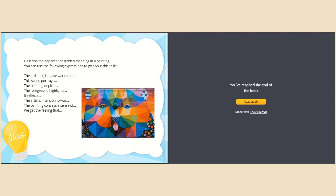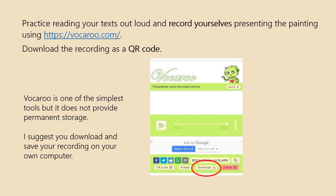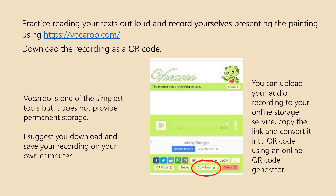Practice reading your texts out loud and record yourselves presenting the painting using this free online tool. Then download the recording as a QR code. For your information, Vokaru is indeed one of the simplest tools to use. However, it does not provide permanent storage and your recording might get deleted in a week or so. Therefore, I suggest you download it and save it on your own computer. You can upload your audio recording to your preferred online storage service, such as Google Drive, OneDrive, or iCloud. Copy the link and convert it into a QR code using any of the QR code generators available.